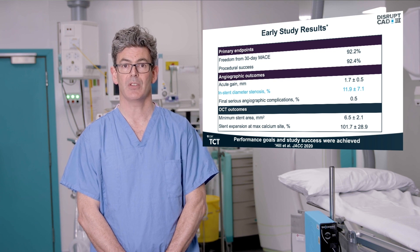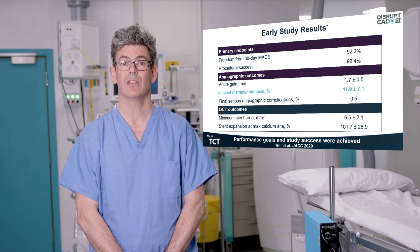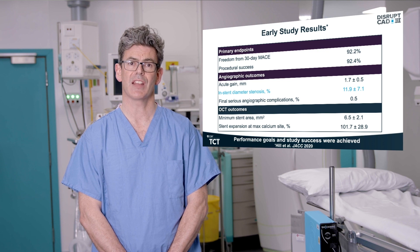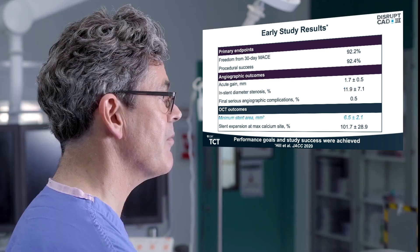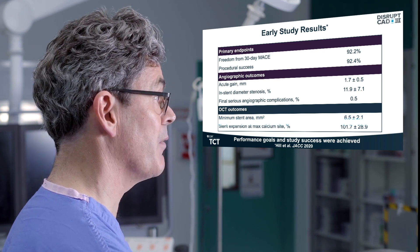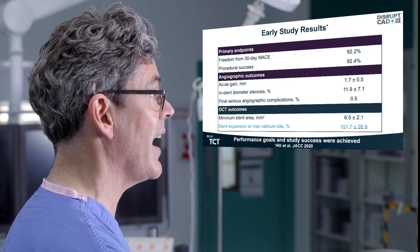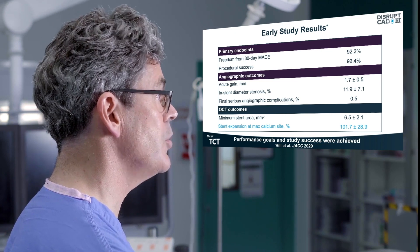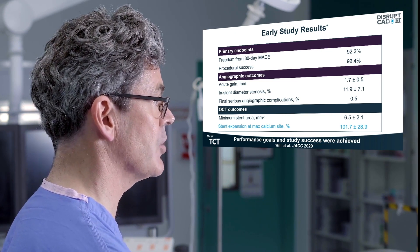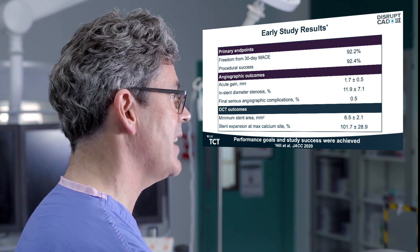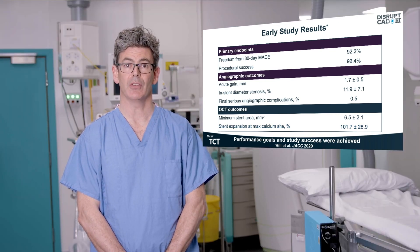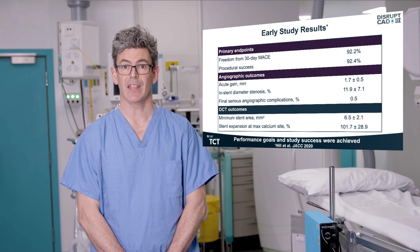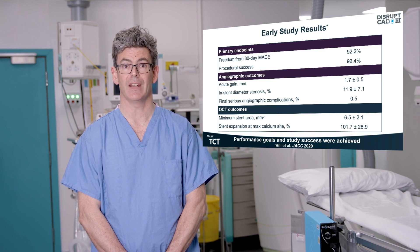Final in-stent diameter stenosis was 12%, with a low rate of serious angiographic complications. The OCT sub-study demonstrated an average minimum stent area of 6.5 mm squared, with an average stent expansion of 102% at the site of maximum calcification. Taken together, these results demonstrated the ability of IVL to safely and effectively facilitate stent implantation and full expansion in severely calcified lesions.